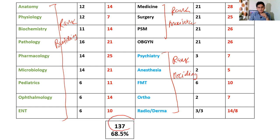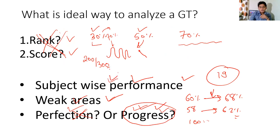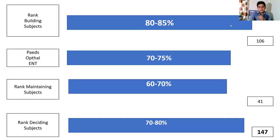Whenever you assess your GT, note that 137 questions out of 200 in November 2021 could be tackled from your rank-building subject knowledge. So if you have consistent and high accuracy in these subjects, you can solve 68.5% of the question paper. The remaining 63 questions can be tackled from rank-maintaining and rank-deciding subjects. You should aim for higher accuracy in rank-building subjects compared to rank-deciding and rank-maintaining subjects.